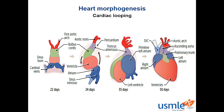The heart begins as a simple tube, as seen on the left here, and is the first functional organ in the embryo when it starts beating in the fourth week. Other organs need blood to develop, and therefore the heart needs to develop before many other organs. The top part of the primary heart tube bends out of the screen towards you and to the right, while the inferior part goes posteriorly, resulting in the second image.